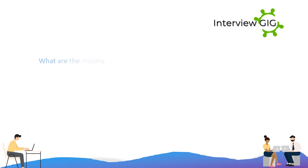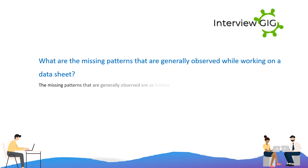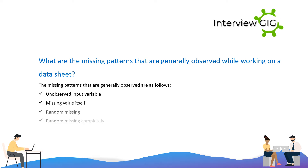What are the missing patterns that are generally observed while working on a data sheet? The missing patterns that are generally observed are as follows: unobserved input variable, missing value itself, random missing, and random missing completely.